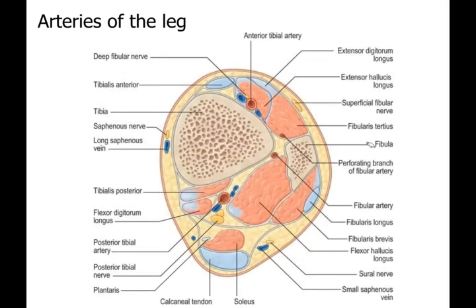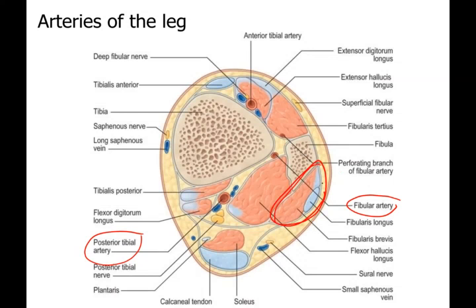You can see this here: the posterior tibial artery and the fibular or peroneal artery are in the posterior compartment. The lateral compartment contains fibularis longus and fibularis brevis. Flexor hallucis longus is also here in the posterior compartment. The peroneal artery remains in the posterior compartment and sends branches to supply the muscles of the lateral compartment.